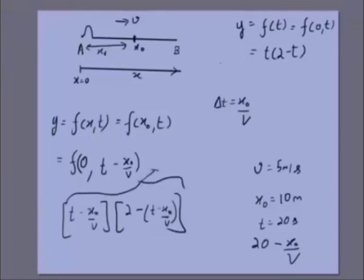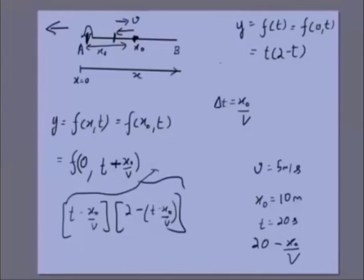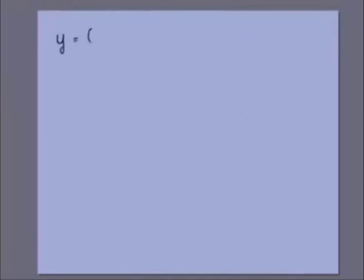In practice we'll usually deal with sinusoidal functions rather than that simple example. The key concept is: the y-position of any x₀ at time t is the same as that of the origin a certain time earlier. If the wave moves in the negative x-direction instead, the sign becomes plus: f(t + x/v). So for a wave moving in the positive direction: f(t − x/v); negative direction: f(t + x/v).